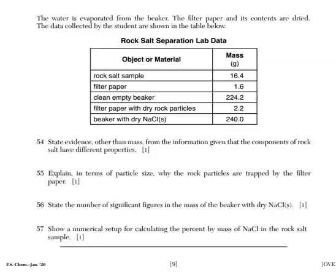For 55, it says, explain in terms of particle size why rock particles are trapped by the filter paper. Well, rock particles are too big to go through the filter paper. Yet anything dissolved in water will pass through. For 56, state the number of sig figs in the mass of the beaker with the dry NaCl. We're looking at this value. What I tell my students, anytime you have a number greater than one and a decimal point, you count them all. That means the 2, the 4, the 0, and then the other 0 to the right. That counts up to four significant figures. All of these values, as soon as you have a number greater than one and a decimal point, count them all. If you have a number less than one, you're not going to start counting until you've gone past those leading zeros, right? The zeros in the front.